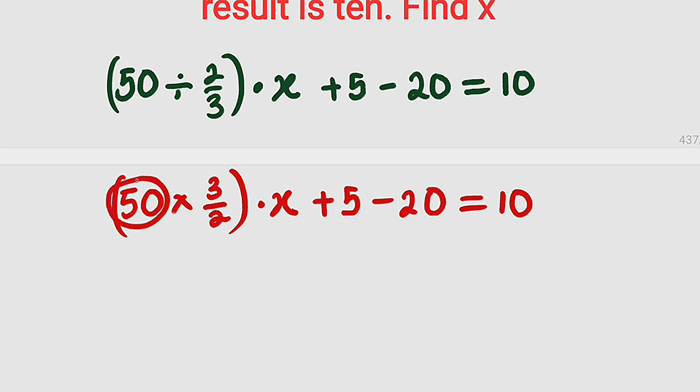This can be written as 50 divided by 2, which is 25, and 25 times 3 is 75. So we have 75 multiplied by x, which is the same thing as 75x.